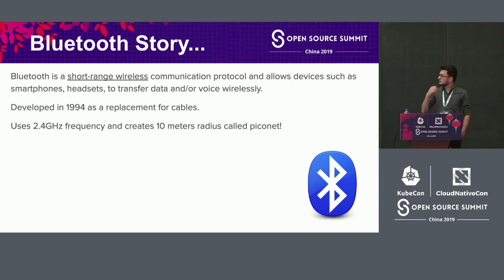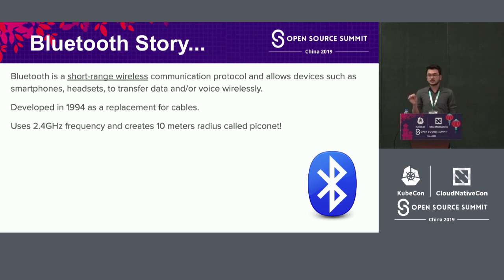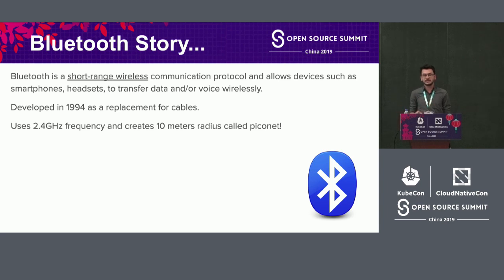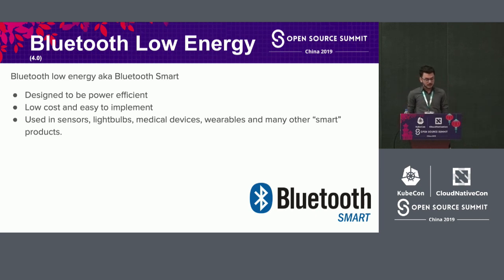Bluetooth is a short-range wireless communication protocol that allows devices such as smartphones, headsets, and many other smart devices to connect and share data and voice wirelessly. It was developed in 1994 by Ericsson as a replacement for cables, uses 2.4 GHz frequency, and creates a 10-meter radius called a Piconet. For many years it had constant data transmission, meaning high power consumption, which caused Bluetooth applications to suffer poor battery life.